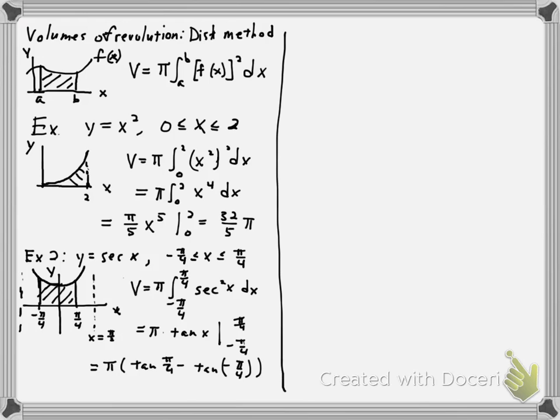The tangent of pi over 4—well, pi over 4 is 45 degrees. Tangent of 45 degrees, so we're in the first quadrant. Sine and cosine are the same, so we have 1. Tangent of minus pi over 4, now we're in the second quadrant, and tangent is minus 1. So we get this equals pi times 1 minus a minus 1, which equals 2 pi.